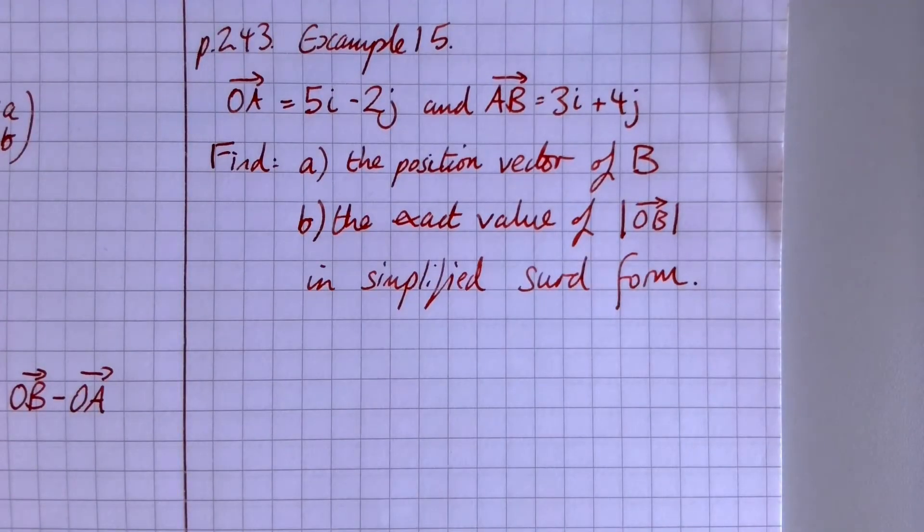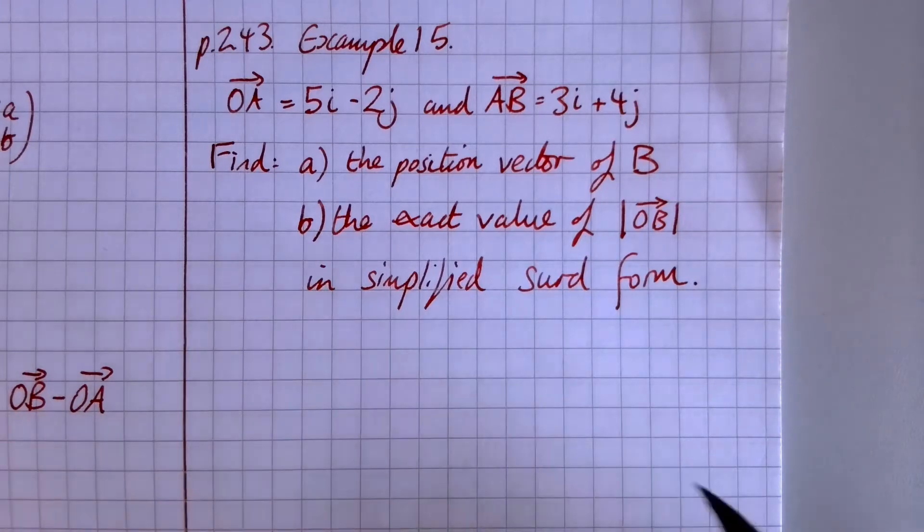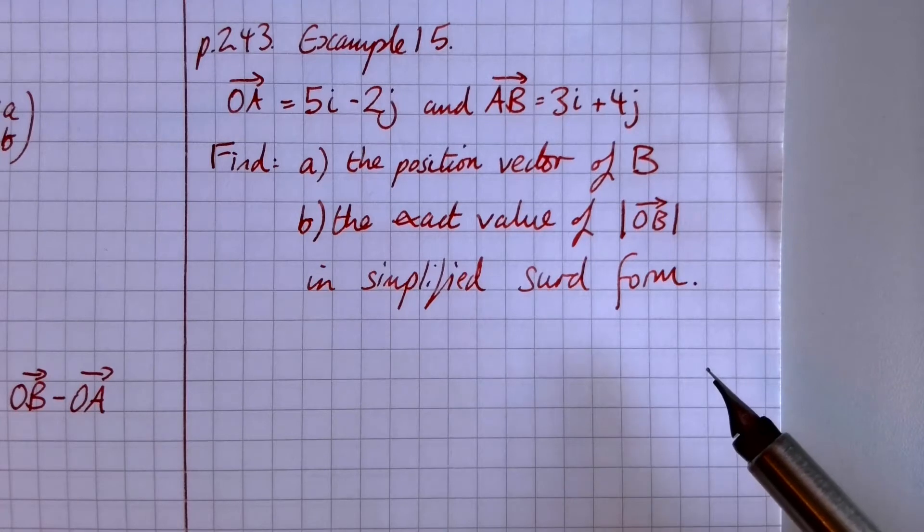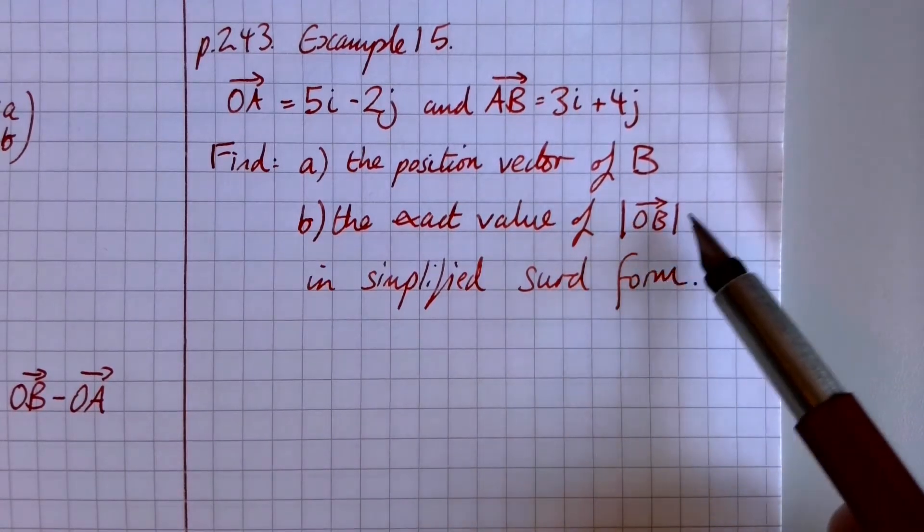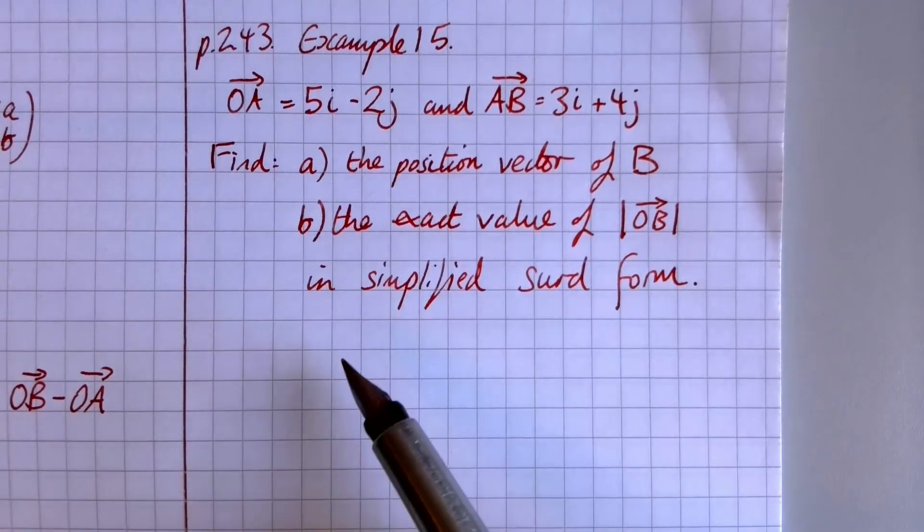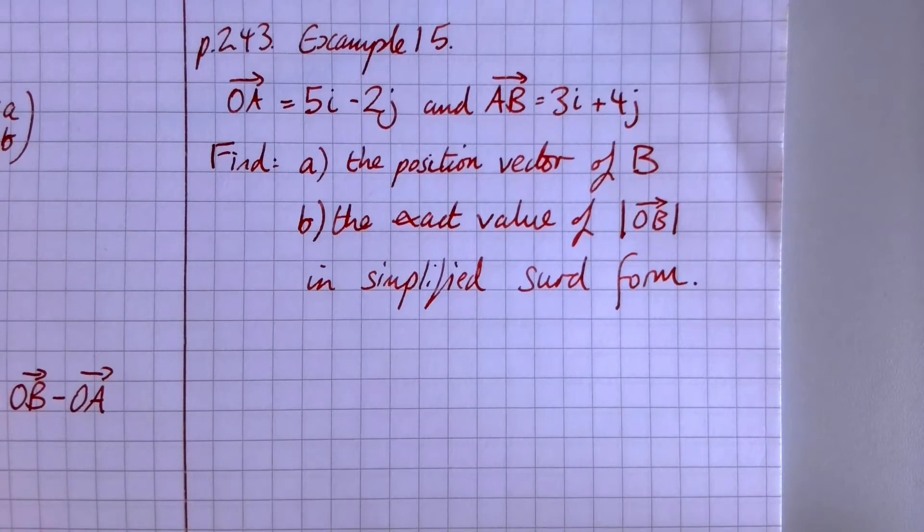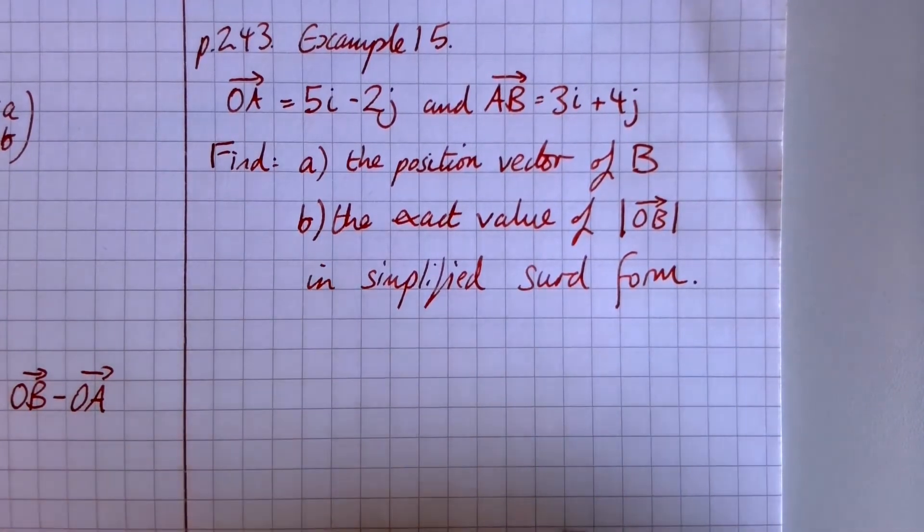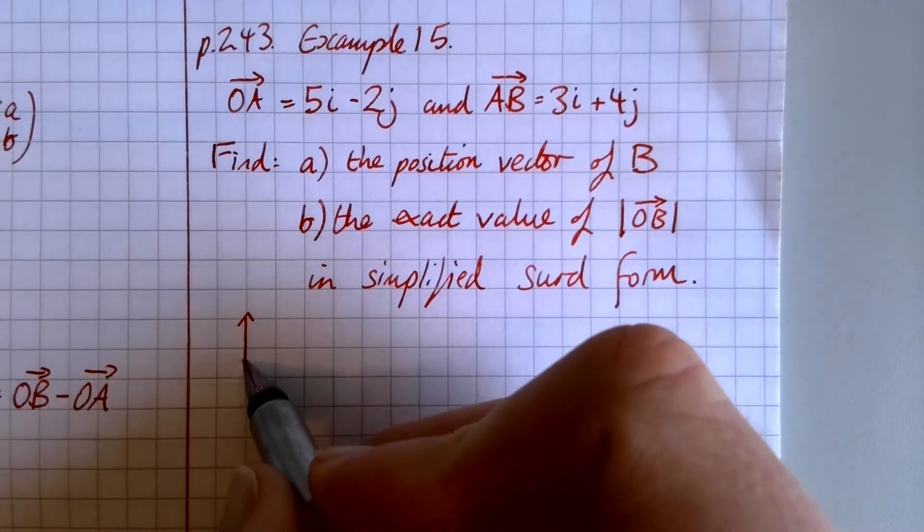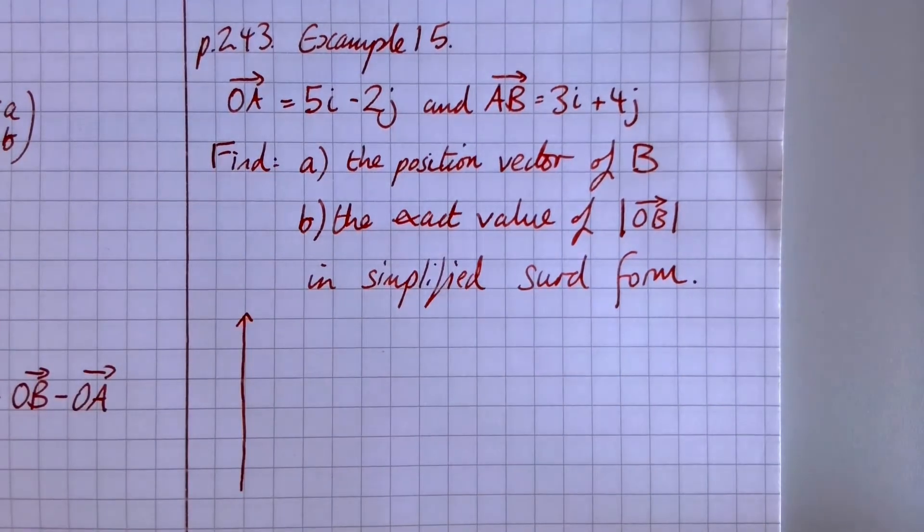OK, so the next example might look something like this. We're told that OA is 5i minus 2j, and AB is 3i plus 4j. We need to know the position vector of B and the exact value of the magnitude of OB. Remember, that's what these two vertical lines here either side mean. What is the size of that vector in simplified surd form? Now, you could try and work all this out without drawing a picture, but I think you're going to make it more difficult for yourself than it needs to be. You're going to have to think harder. So I'd always start off by drawing a picture.